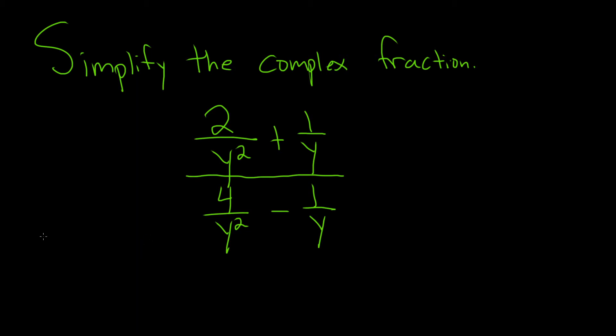So to do this, I think the best way is going to be, or one way, is to multiply by one in a clever way. You see, if we multiply the numerator by y squared, when we distribute this, it's going to kill all of the y's. So we can do the same thing on the bottom.